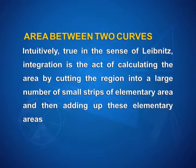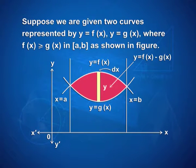Now let us study how to calculate the area between two curves. Intuitively, in the sense of Leibniz, integration is the act of calculating the area by cutting the region into a large number of small strips of elementary area and then adding up these elementary areas. Suppose we are given two curves y = f(x) and y = g(x), where f(x) ≥ g(x) in the closed interval [a, b], as shown in the figure. We have two curves with width dx and height equal to f(x) − g(x).